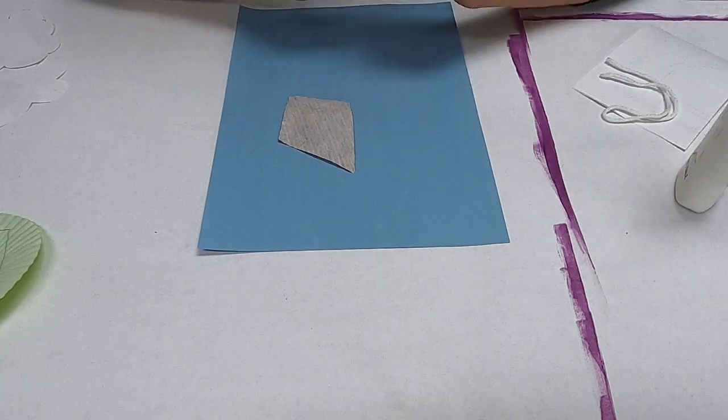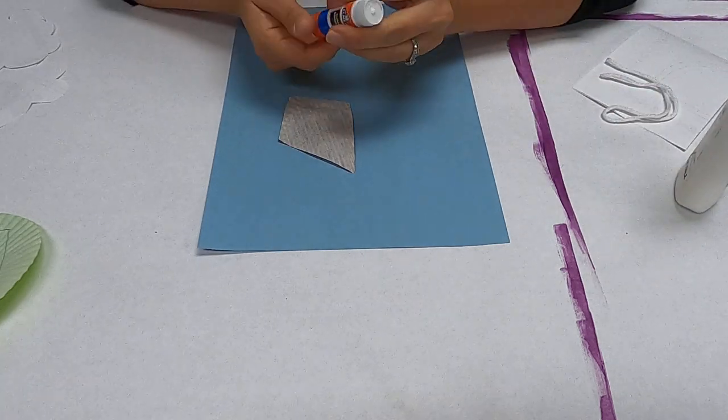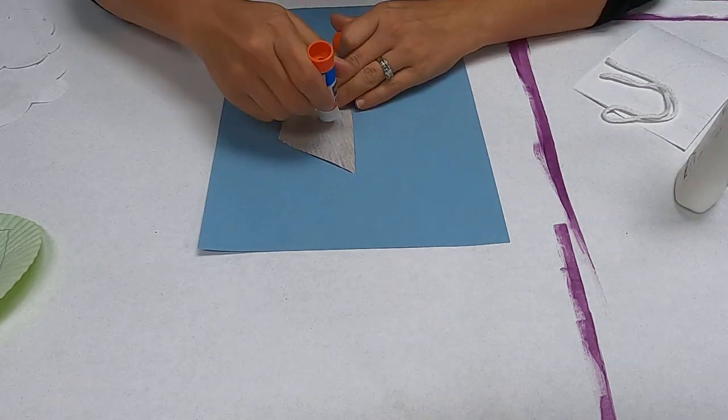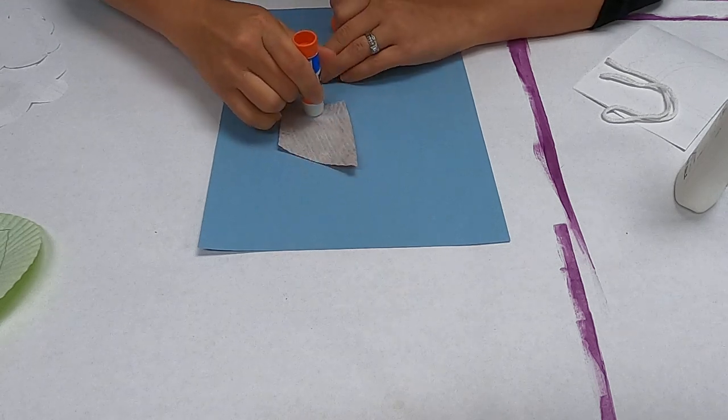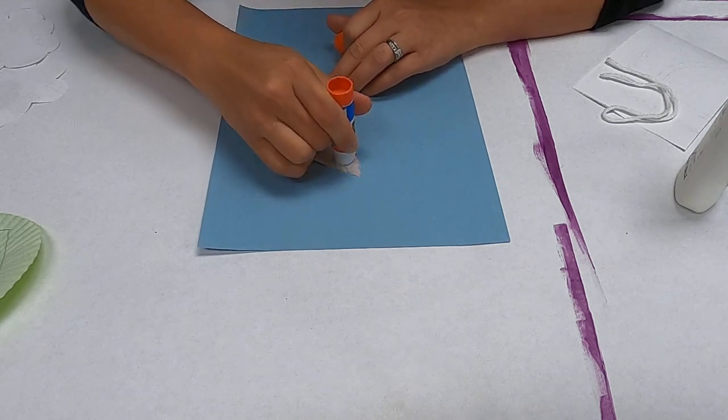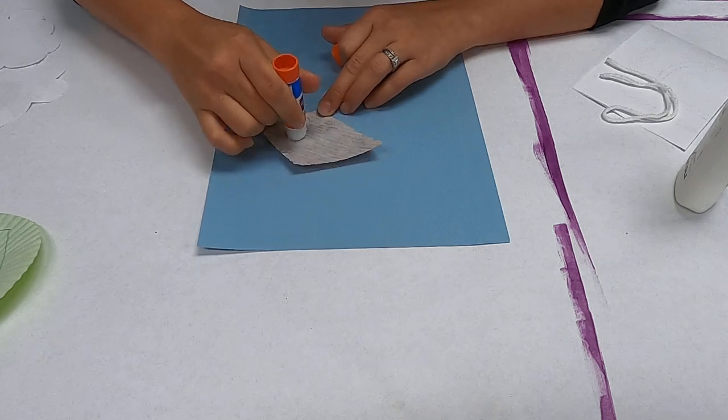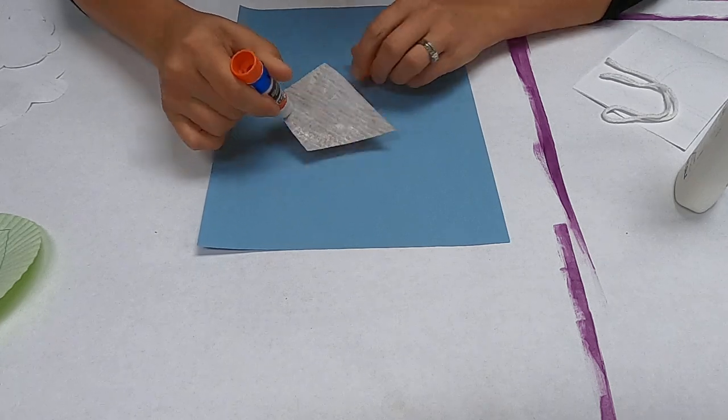So what I'm going to do is flip it over and I'm going to use my stick glue for this, because you can get all the way to the very edges. You want to make sure you get the whole thing because it will curl up a little bit.